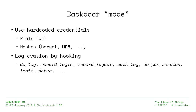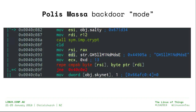Now the backdoor mode. Basically the backdoor mode prevents logging — this is not an exhaustive list of all the functions you can hook, but there are quite a few. We've seen plain text hard-coded credentials, and hashes such as bcrypt or MD5. Here is a quick snippet: it's just a crypt function with a salt.